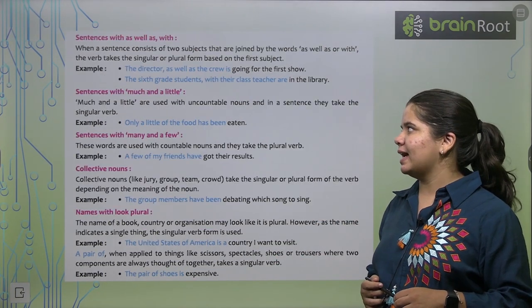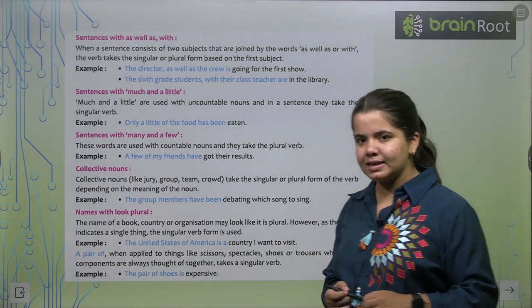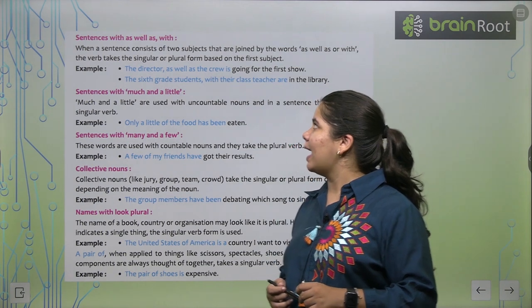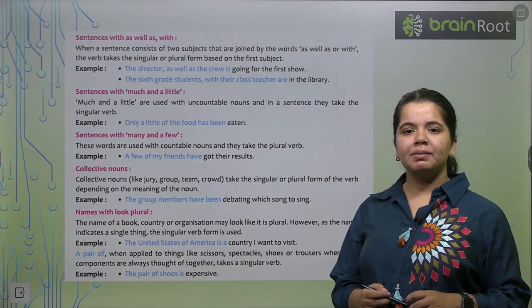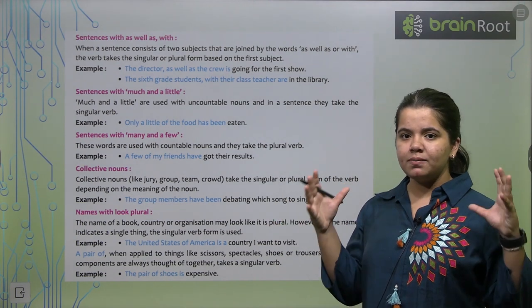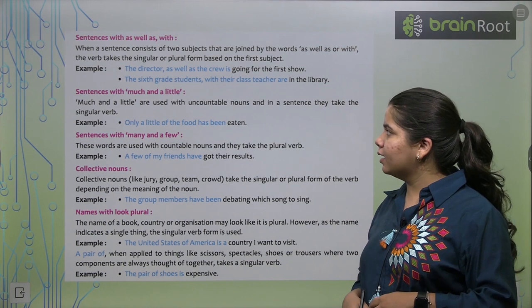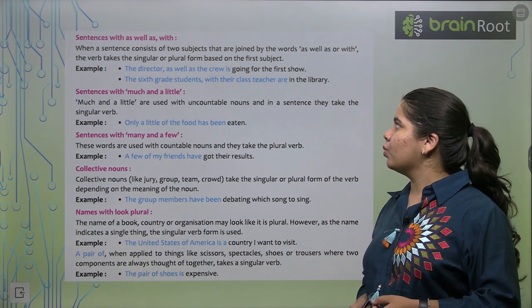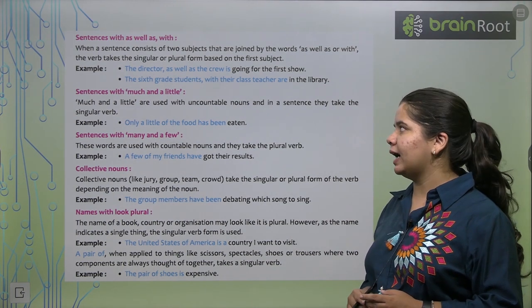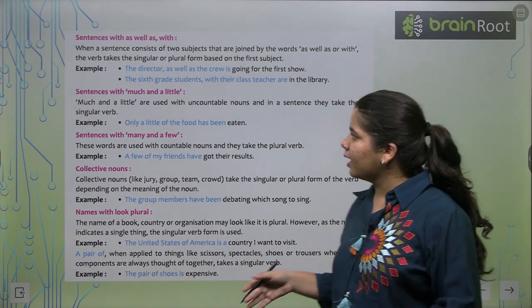Next, sentences with as well as. Kuch sentences ke saath hum as well as bhi use karte hai. The director as well as the crew. Jab hame kya batana hota hai? Ki ye subject bhi, aur ye bhi. Toh, hum and ye alternative mein as well as use kar sakte hai. The sixth grade students with their class teacher are in the library.